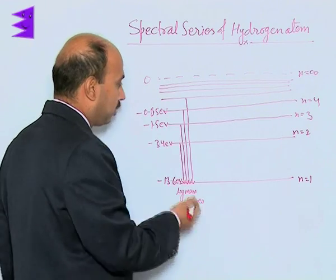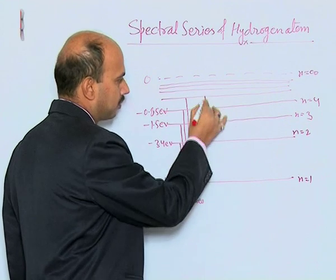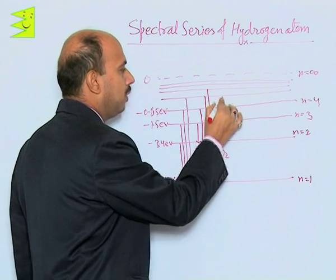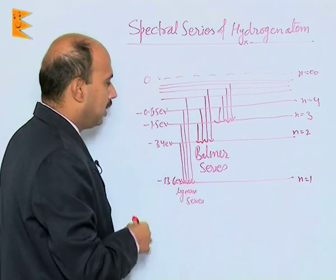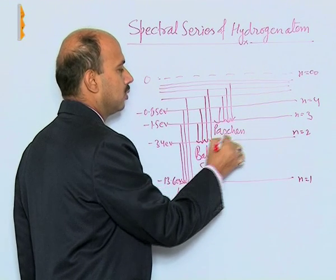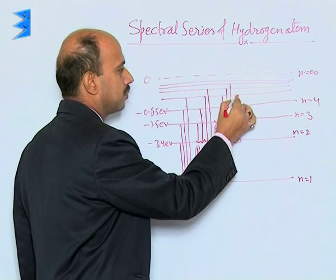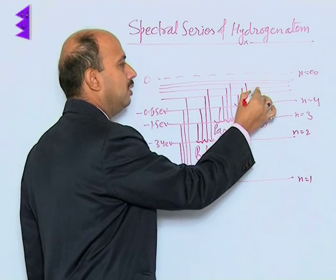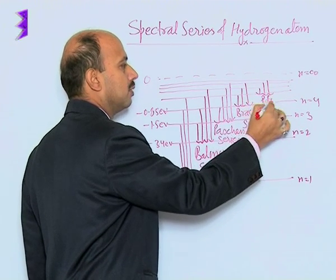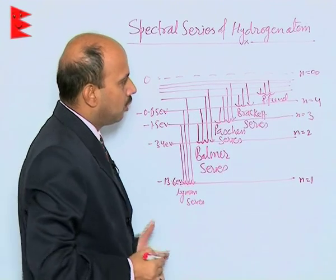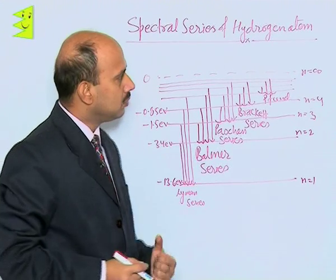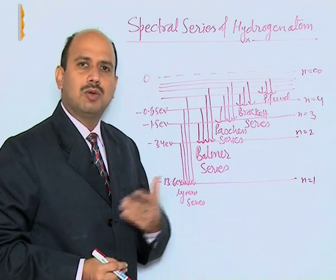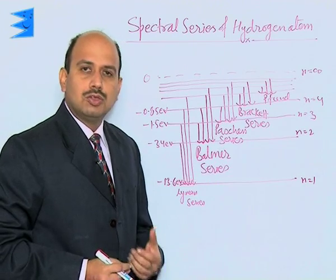When the electrons jump to the second state, that is called the Balmer series. When jumping occurs to the third level, it is called the Paschen series. When jumping is to the fourth level, it is called the Brackett series, and when jumping is to the fifth level, that is called the Pfund series. At the infinite state, the energy becomes 0, which corresponds to ionization — the electron leaves the orbit and goes to an infinite distance.